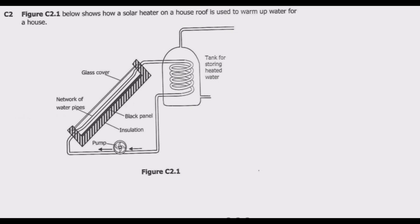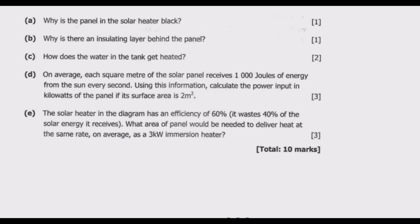The question reads: figure C2.1 below shows how a solar heater on a house roof is used to warm up water for a house. We have the storage tank for storing heated water, the glass cover, the black panel, insulation, and a network of water pipes.